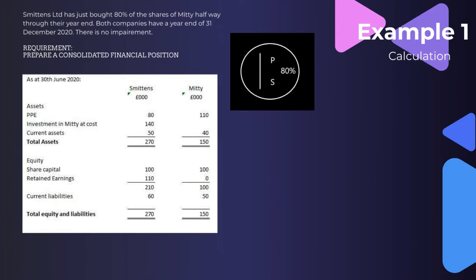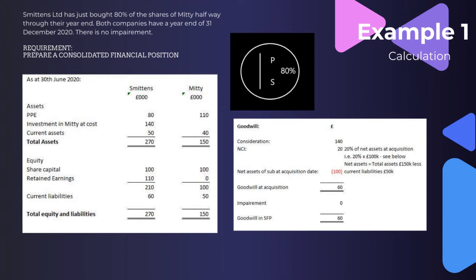To work out goodwill, we take the consideration — the investment of 140k — and then work out the non-controlling interest. The NCI owns 20% of the net assets at acquisition: total assets of 150k minus current liabilities of 50k gives net assets of 100k, so 20% of 100k is 20k. We then deduct the net assets of the subsidiary at acquisition date of 100k, giving us goodwill at acquisition of 60k. There's no impairment, so goodwill in the statement of financial position is 60k.